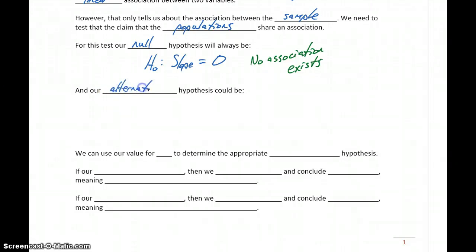The alternative statement could be that our slope is greater than zero, less than zero, or simply not equal to zero. We'll determine which alternative hypothesis is appropriate by looking at the correlation coefficient. If our correlation coefficient is positive, we'd want the alternative hypothesis to be that the slope is positive. If the correlation coefficient is negative, we'd want the alternative to say the slope is negative.